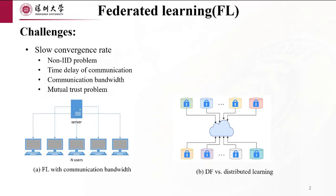Firstly, let's introduce the classical training process in federated learning. As shown in Figure A, each agent trains a local model and shares its model parameters with the central server. Subsequently, the server updates the model and sends it back to the agents. However, federated learning encounters challenges such as non-identically distributed problem, time delay of communication, communication bottlenecks, and trust bottlenecks as shown in Figure B.